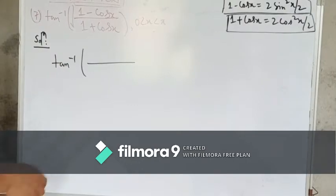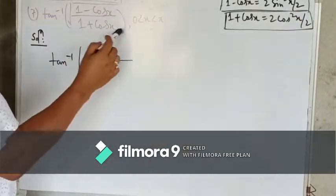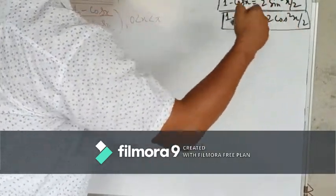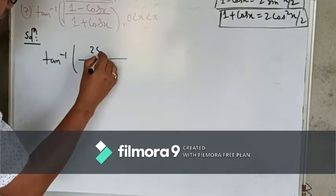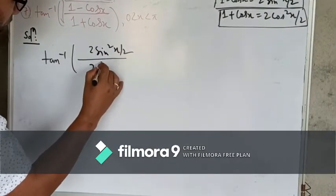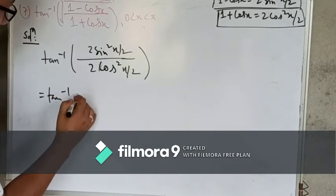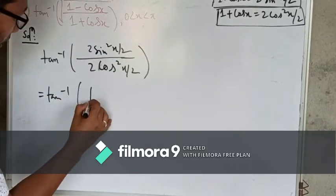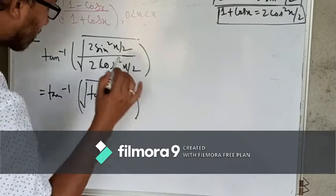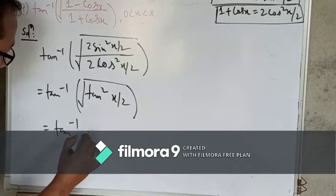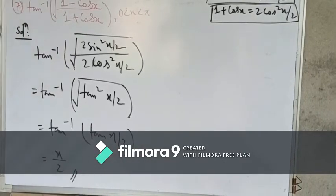We have to recall the identities: 1 minus cos x is 2 sin squared x by 2, and 1 plus cos x equals 2 cos squared x by 2. Already I have written down these two. So we will write 1 minus cos x is 2 sin squared x by 2, and this is 2 cos squared x by 2. So tan inverse — the 2 will cancel, then sin squared by cos squared is tan squared x by 2. So it is tan inverse of tan x by 2, which equals x by 2. So this is the simplest form.